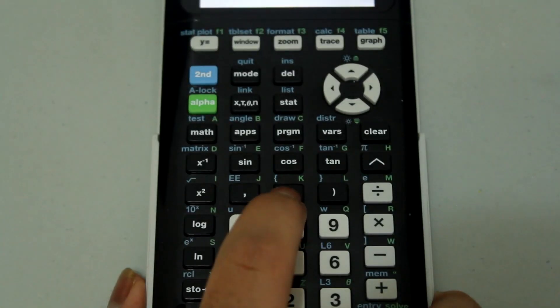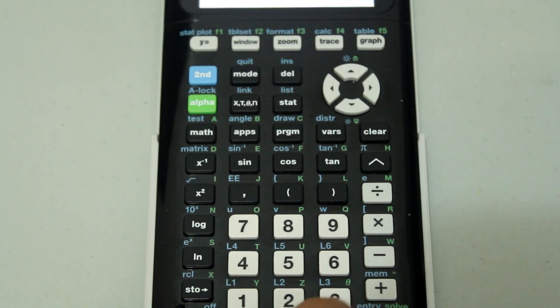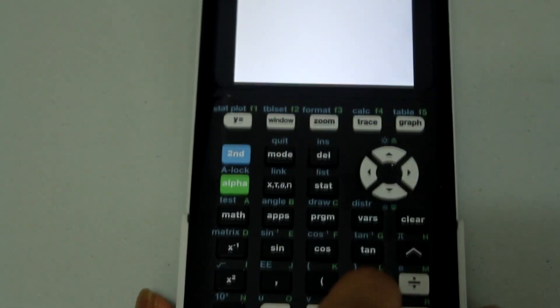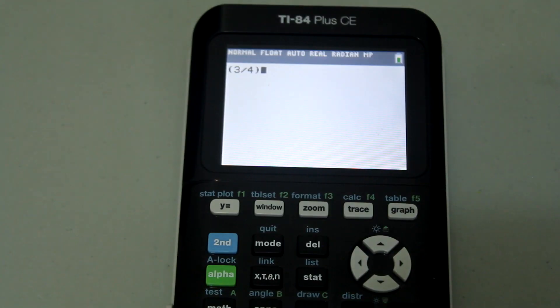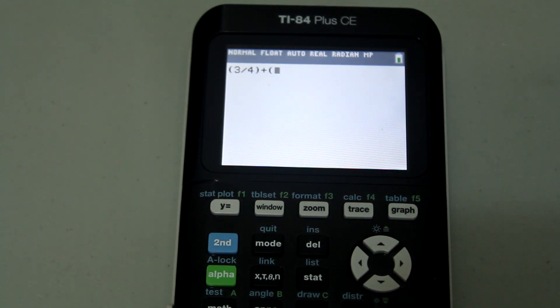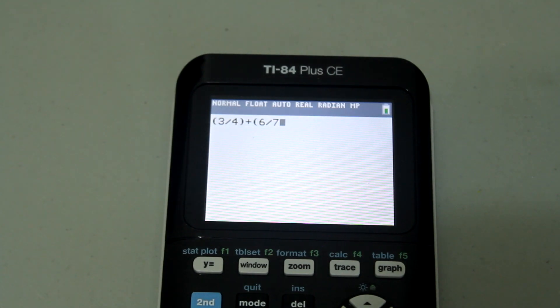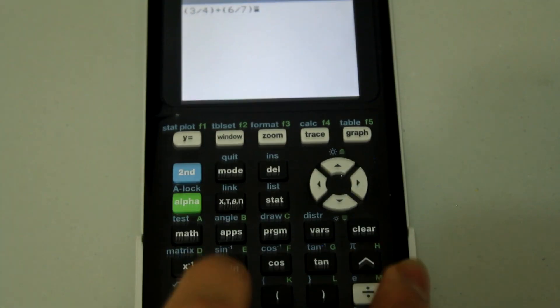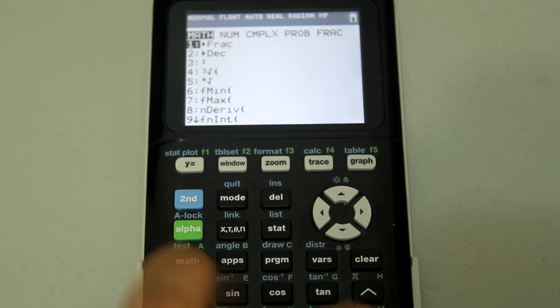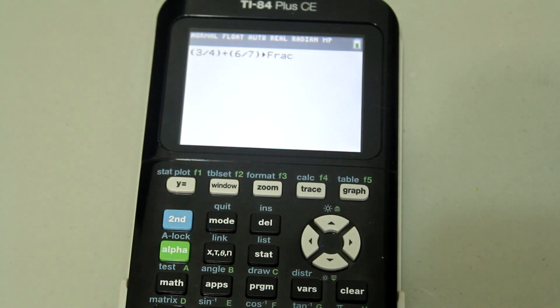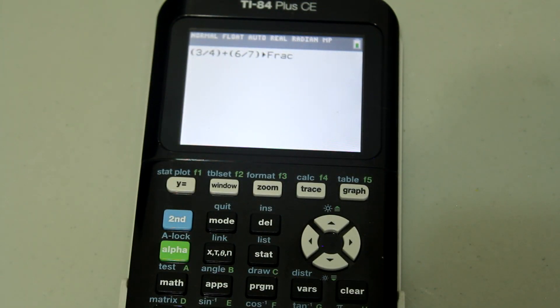What you could do is let's make a parentheses three and use the regular division sign three divided by four. Close the parentheses and let's add six. And once again, use the regular division sign seven. And before you hit enter, hit the button that says math. And notice that the first option is fractions. Just hit enter. And notice that you have three over four in parentheses plus six over seven in parentheses.